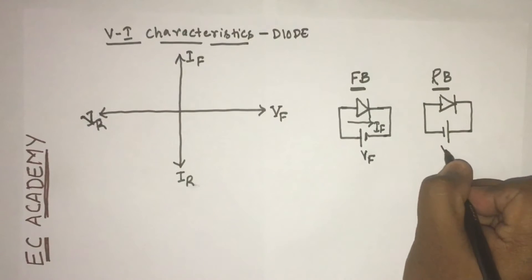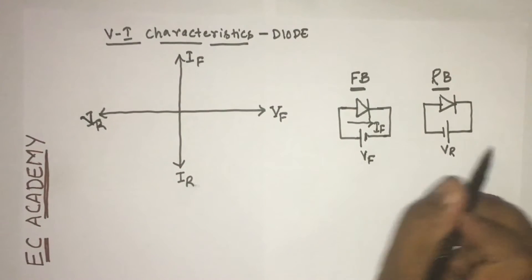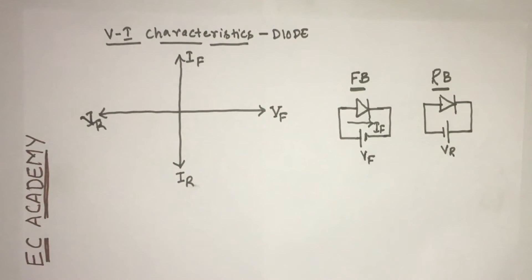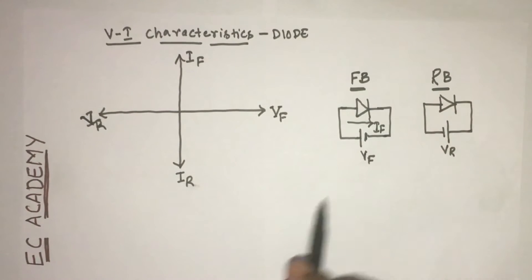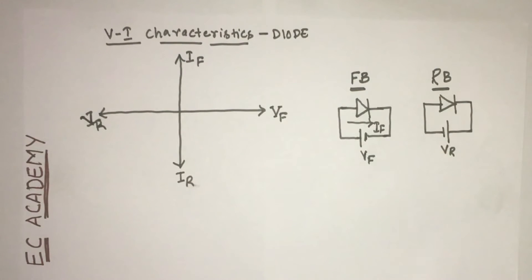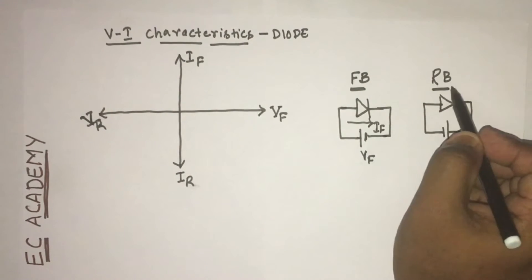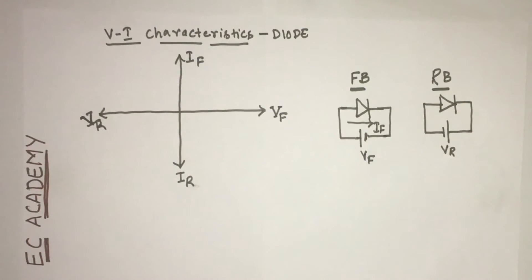The cathode of the diode is connected to the positive terminal of an external voltage source, and the applied voltage is known as Vr, which is reverse voltage. The current flowing through the diode when connected in reverse bias condition is known as reverse current.